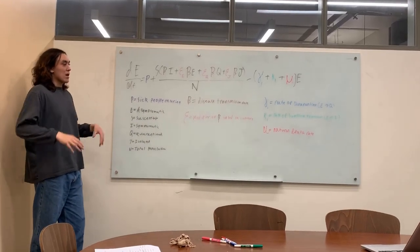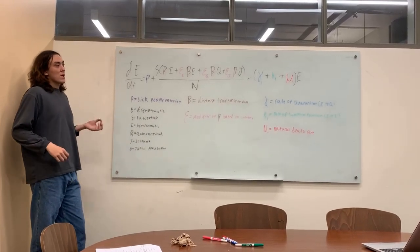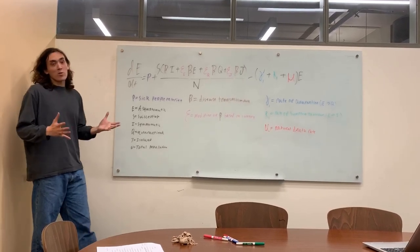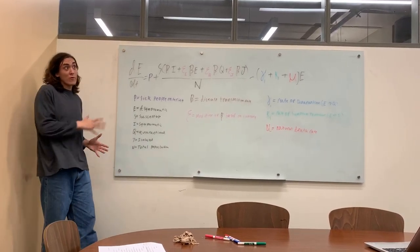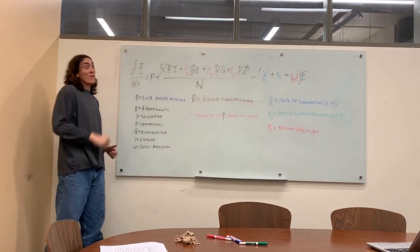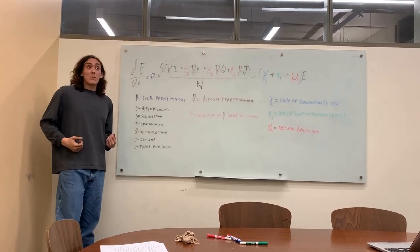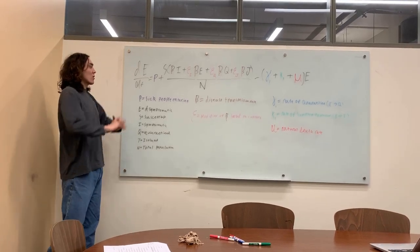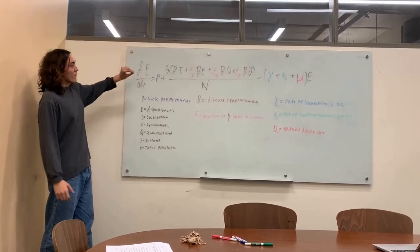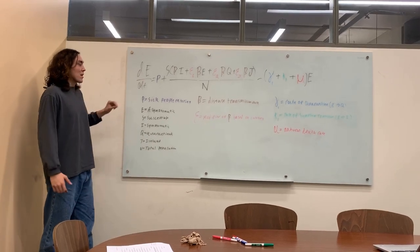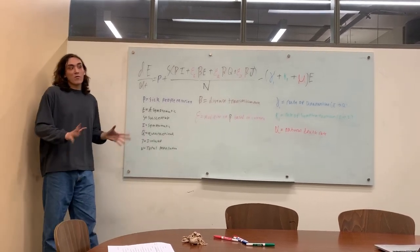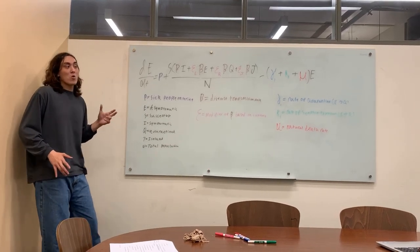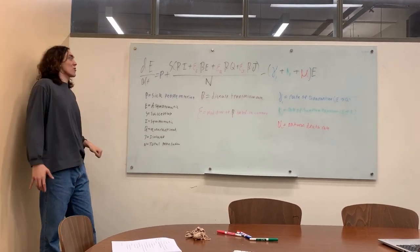I'm going to be explaining the dE/dt equation, this being the change in asymptomatic individuals over time. It's worth knowing that each subpopulation has their own version of this equation, but we are only focusing on this one because it has the most parameters and is the most complex, and also for time constraints. If we look at this equation, first initially we have P, which is the number of sick people entering independent of any sort of subpopulation we have in our group. This is people emigrating from another area who are already sick and automatically enter E.